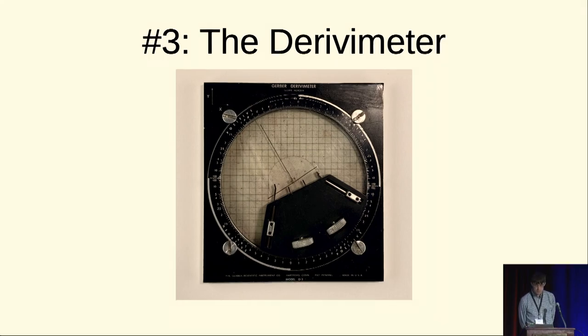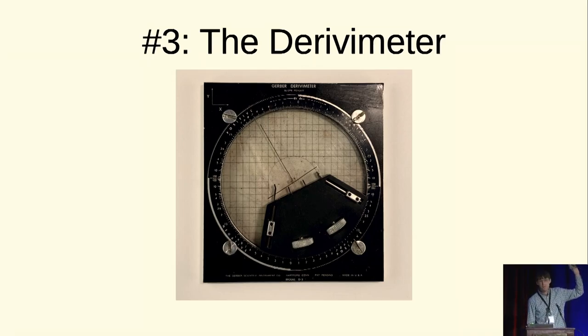So those were the variable scale and the graph analog. I have another one, this is completely different. This is called the derivative meter. It's a small square thing and it measures the derivative of a curve on paper.